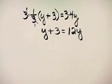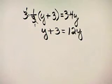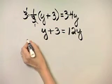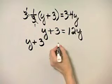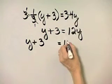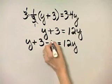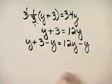Now, we don't have any parentheses, so we want variable terms on one side and numbers on the other side. If I subtract Y from both sides, I will have variable terms on the right and constants on the left. Here is the left side of the equation, here is the right side. I'll subtract Y on the left and subtract Y on the right.